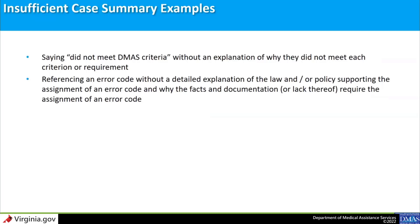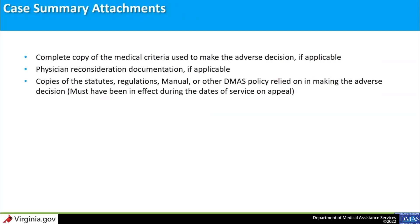If a provider alleges that a case summary is insufficient, the IAA will communicate the alleged deficiency to the department and provide a required time frame for the department to respond. With each case summary, DMAS or the DMAS contractor must provide attachments to support the summary. These include a complete copy of the medical criteria used to make the adverse decision (if applicable), documentation of any physician reconsideration, copies of the statutes, regulations, manual chapters, or other DMAS policy relied upon in making the decision. These must have been in effect during the dates of service on the appeal. For audits and enrollment issues, the case summary should include copies of the records, forms, or applications audited or reviewed and denied, a copy of the final denial issued to the provider, and any interim decisions leading up to the final denial.